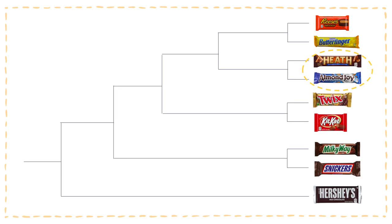The next two OTUs in our tree both contain nuts, suggesting that the candy bars recently evolved to host nuts. Heath bars and Almond Joy are in the same OTU and both contain almonds.